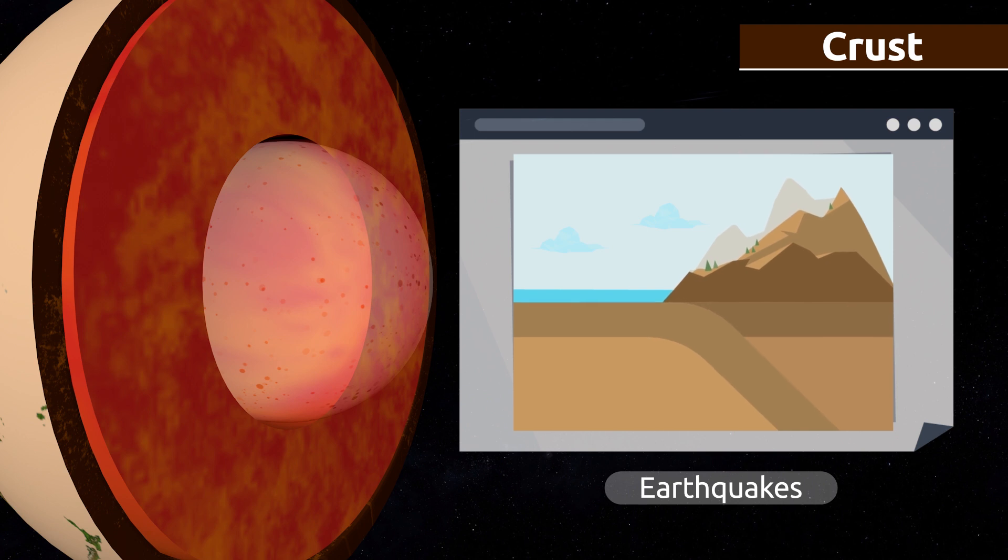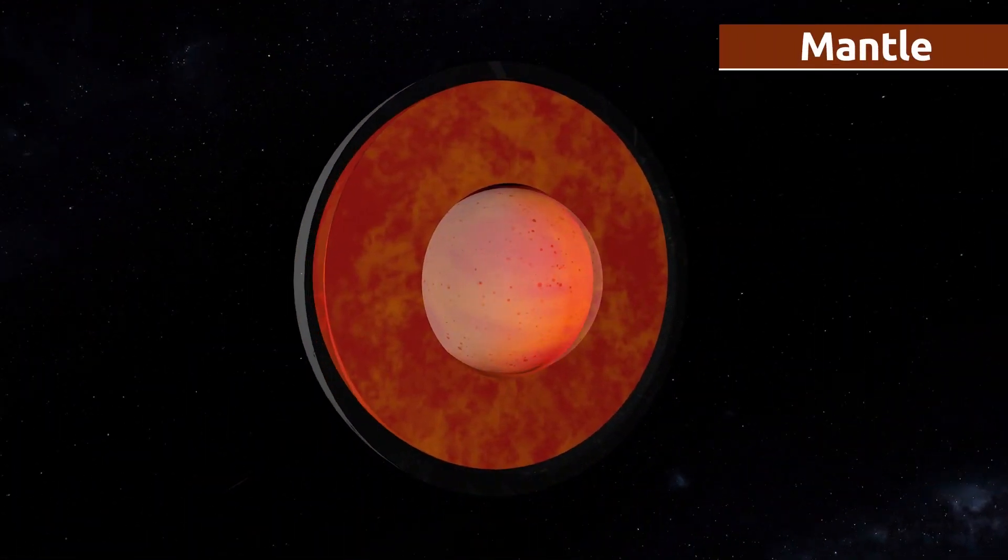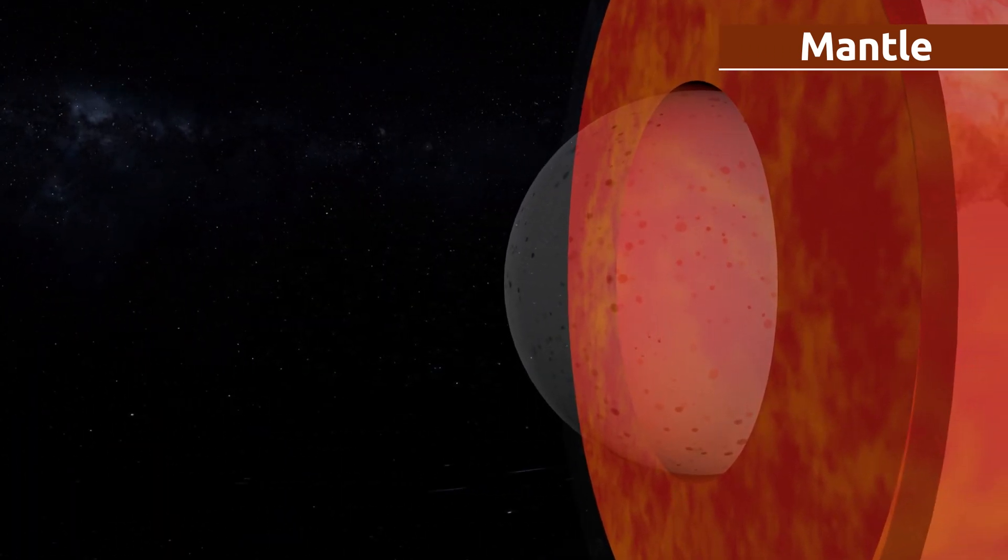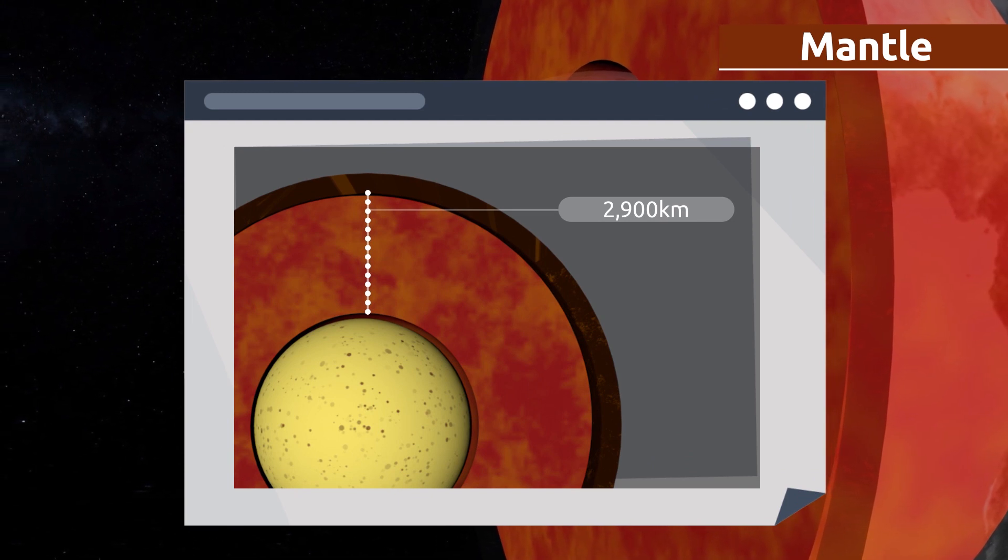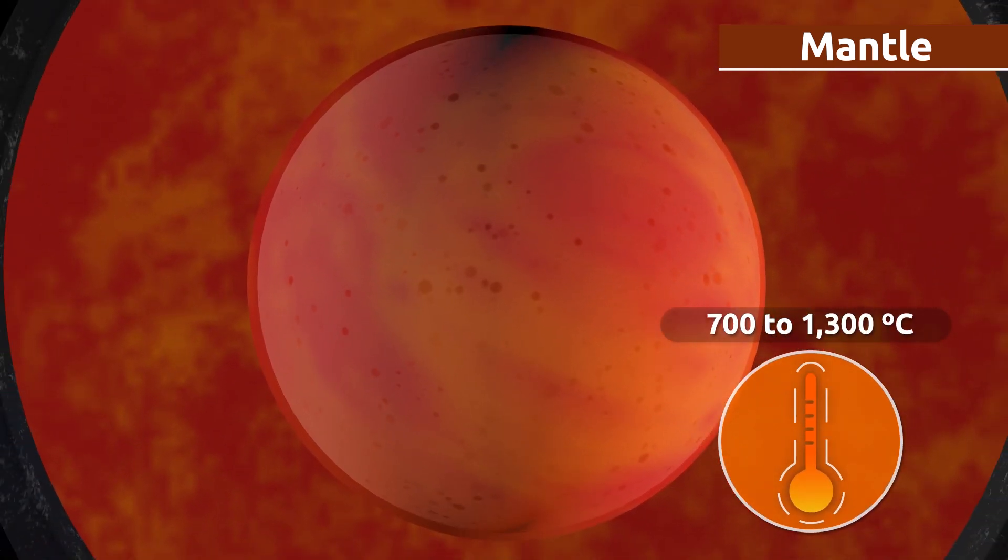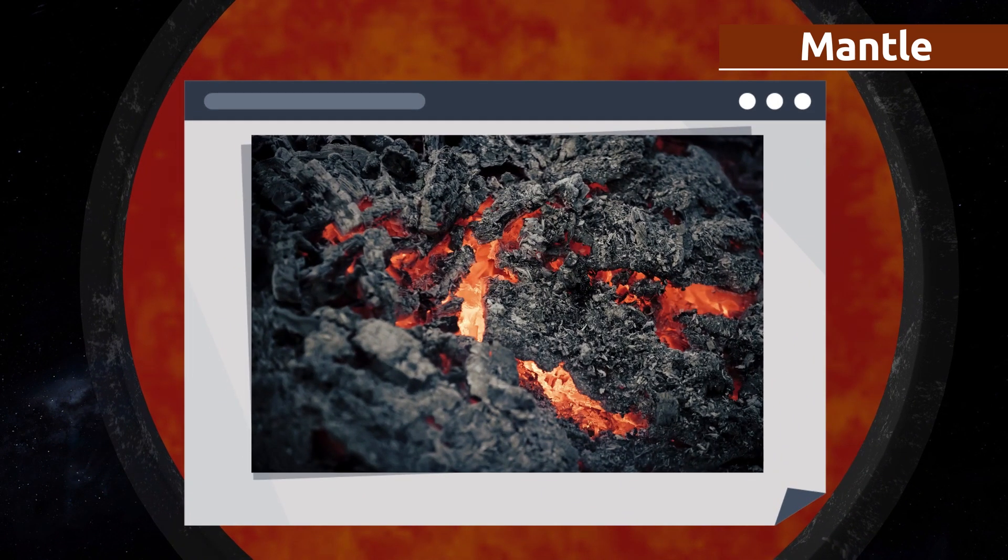The second layer of the geosphere is called the mantle. It is 82 percent of the Earth's volume, being 2,900 kilometers thick. The temperature of the mantle is really high, ranging from 700 to 1,300 degrees Celsius. That's why it's made up of molten rock called magma.